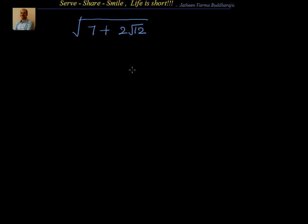First we will try to understand what steps we have to follow, then I will give you the shortcut method with the help of which you can easily identify that. You don't need to do the whole derivation. So, we have to find out the square root of this, and I will say it is equal to the form of root a plus root b.